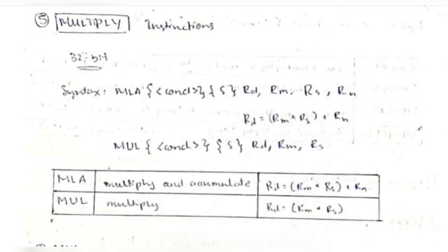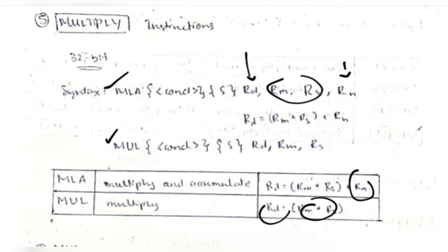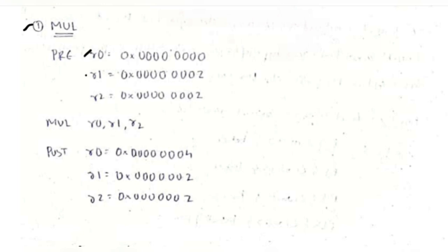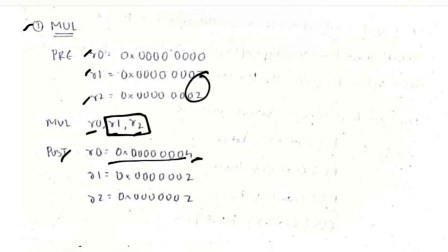Multiply instructions have two types: MUL (multiply) which multiplies Rm × Rs and stores the result in Rd, and MLA (multiply-accumulate) which computes Rm × Rs + Rn and stores in Rd. For example, MUL r0, r1, r2 with r1=2 and r2=2 gives 4, stored in r0.